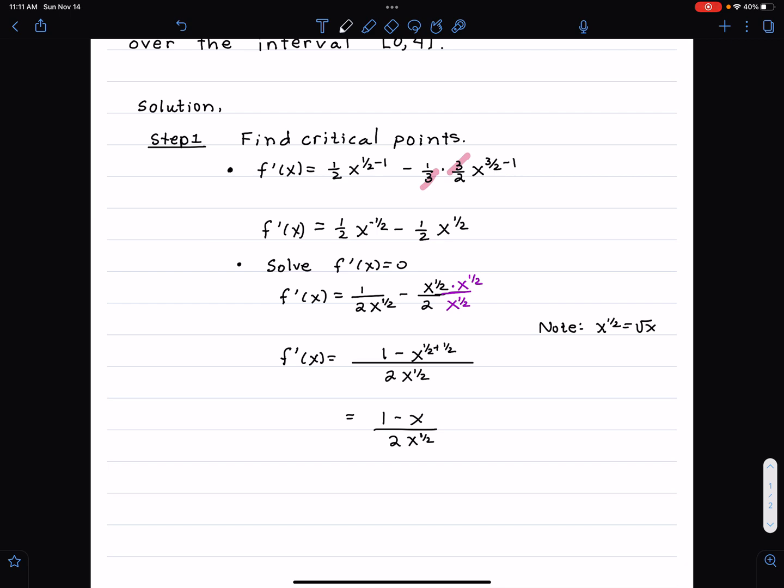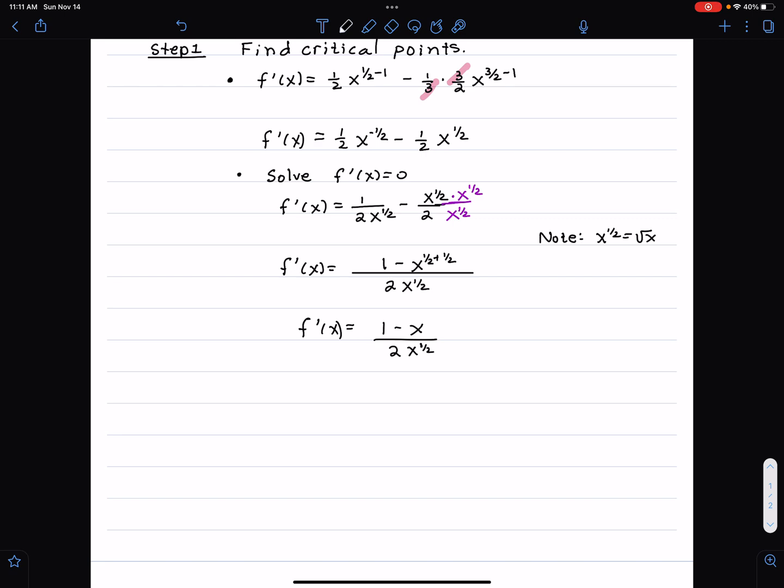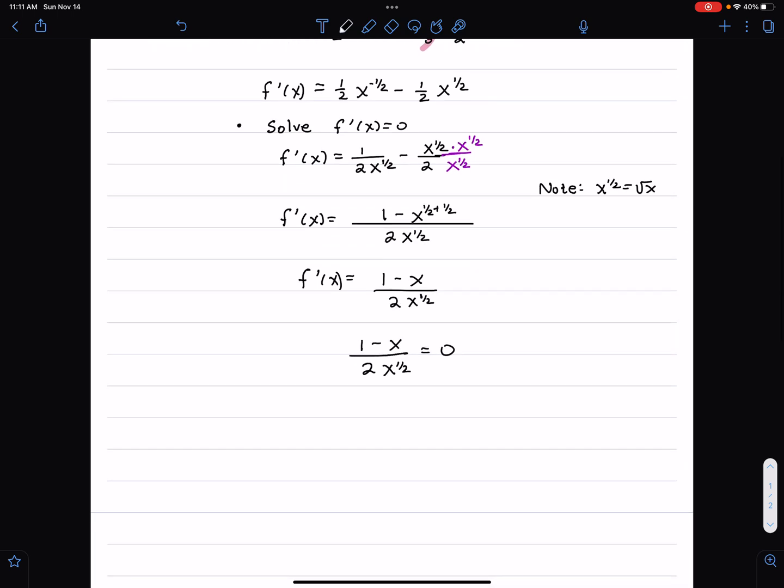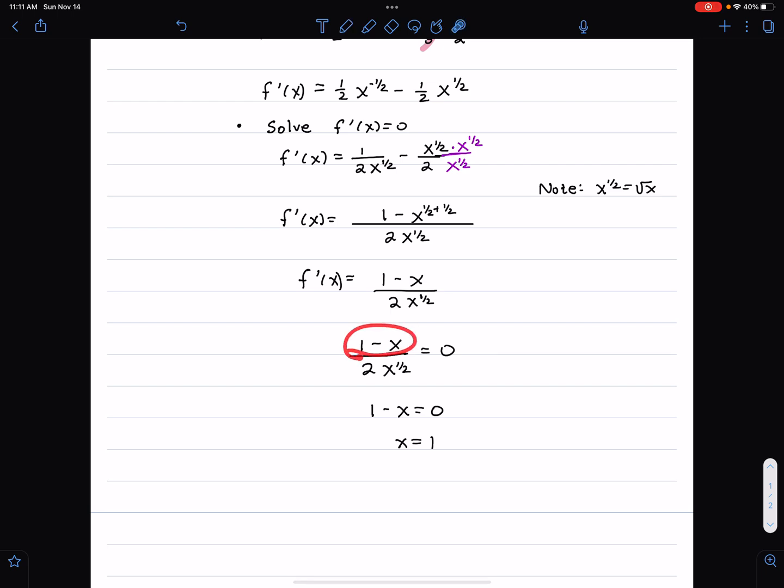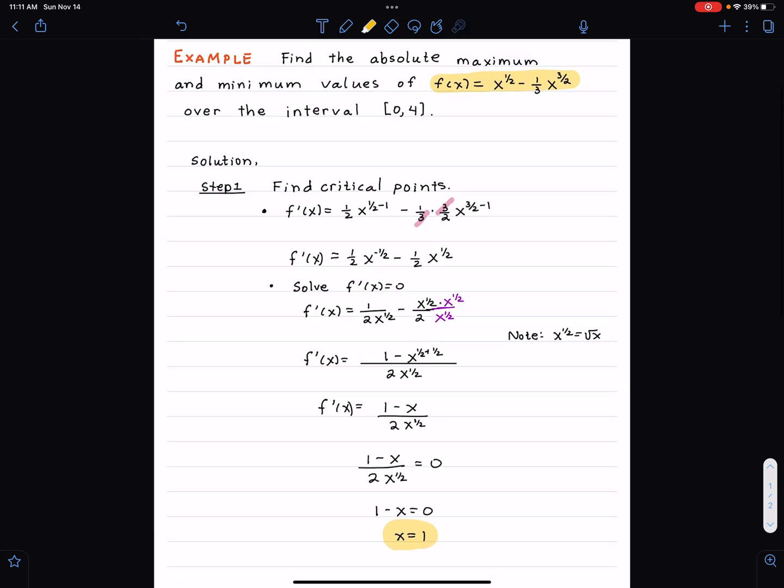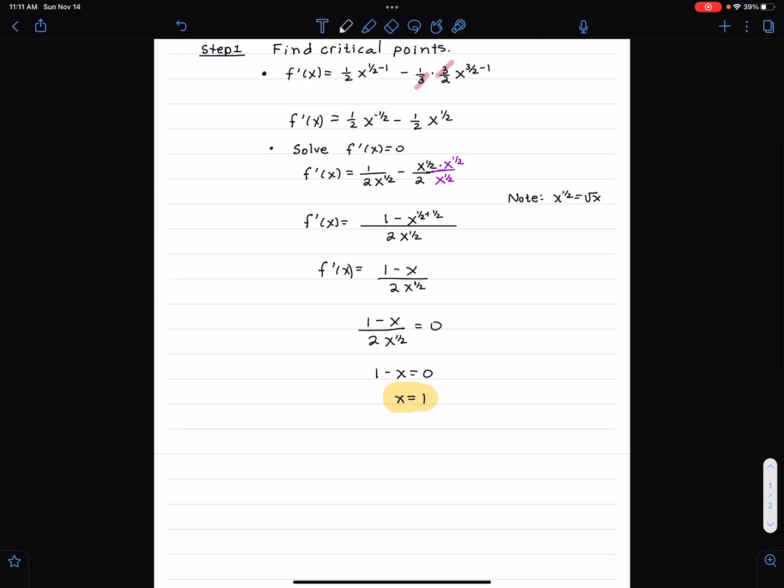I'm going to solve f'(x) equal to zero. So I set this equal to zero: 1 minus x over 2x to the 1/2 equals zero. The fraction equals zero when the numerator is equal to zero. 1 minus x equals zero, x equals one. The numerator has to equal zero, and we have to make sure that x equals one is in the domain. Sometimes we'll get a critical point and it turns out one is in the domain and one isn't. One is between zero and four.